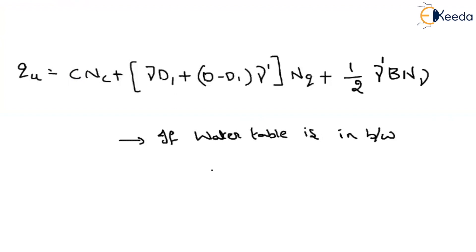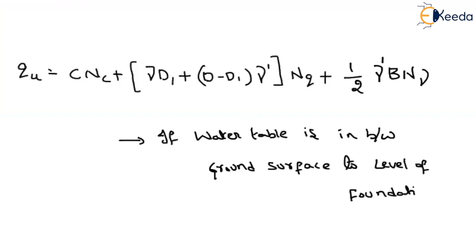This is the bearing capacity when the water table is between the ground surface and the level of foundation. Remember only one thing: if you blindly memorize equations, about 70% of students will make mistakes. Instead, wherever there is a water table, use the submerged unit weight; wherever it is in dry state, use the dry unit weight. Rewrite the equations in the exam itself based on the water table position — that will give you the correct answer. In the next video we will solve a problem based on this. Thank you.